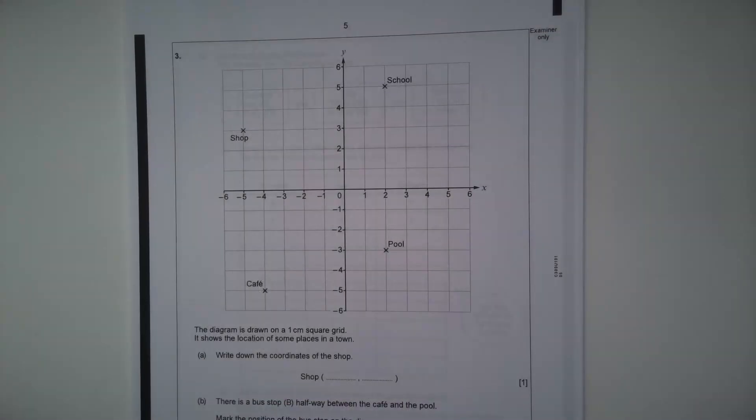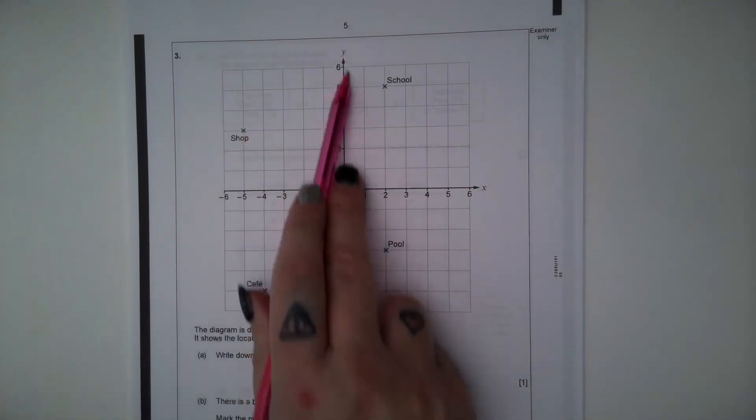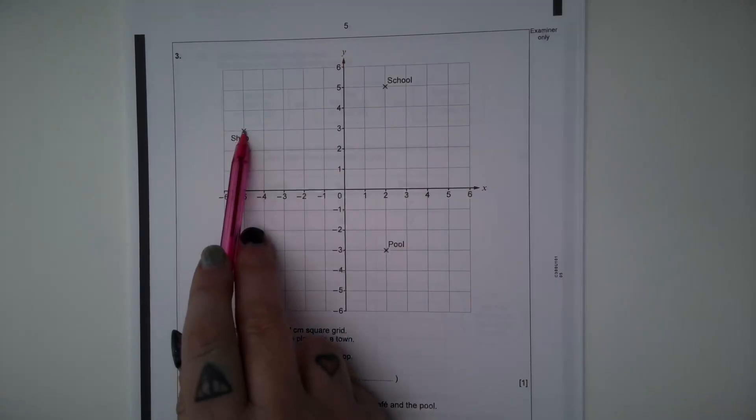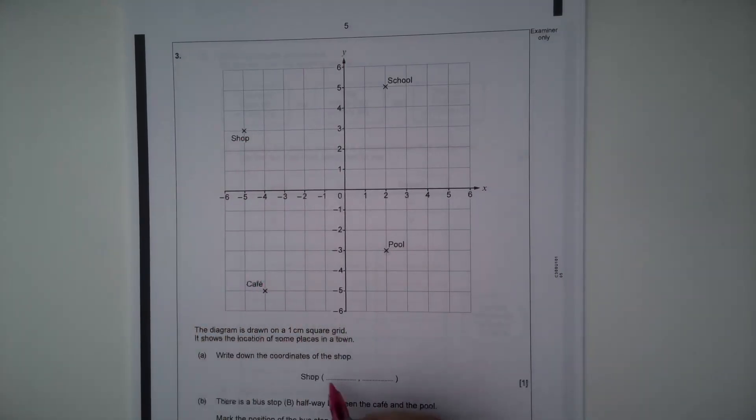Question three. The diagram is drawn on a one centimeter square grid. It shows the location of some places in a town. Part A, write down the coordinates of the shop. So this is the shop here and our coordinates. We deal with the x coordinate first, then we deal with the y coordinate. So if we read down from where the shop is plotted, the x coordinate is negative five. And then if we read across in a straight line, the y coordinate is three.